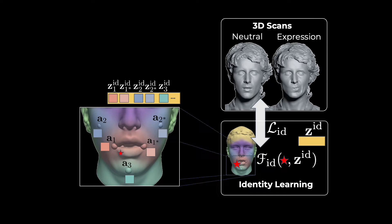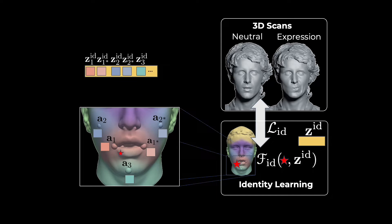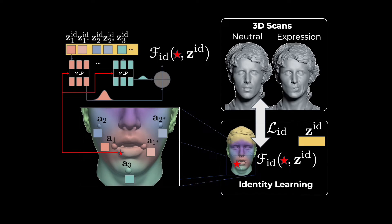Additionally, we propose a novel implicit representation to model a person's canonical head. Our sign-distance field is decomposed into an ensemble of local MLPs, which are centered around face anchor points, each conditioned on their respective latent code.